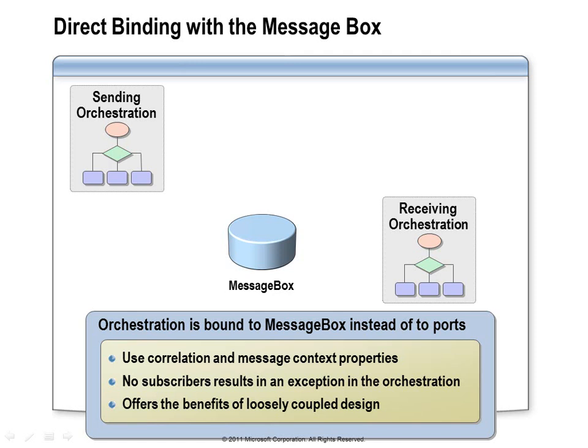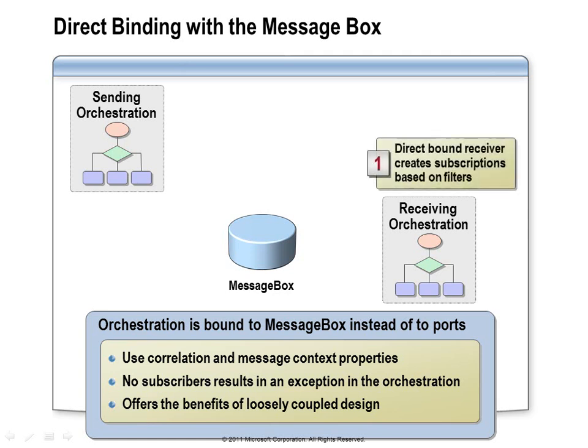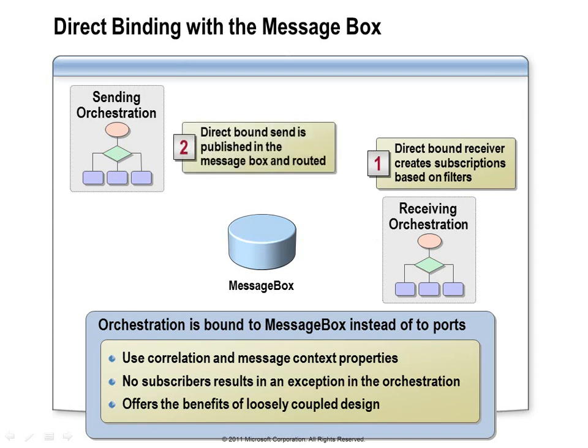Of the three options, binding directly to the message box offers the most flexibility, but it requires more attention to detail. We are taking almost complete control over the way an orchestration port interacts with the message box. When we bind orchestration receive ports directly to the message box, we need to specify filter conditions on the corresponding receive shapes to define subscription conditions. When we have orchestration send ports directly bound to the message box, we need to ensure the message context is populated correctly. If there is no subscriber, the orchestration will receive an exception, so our design needs to account for that.